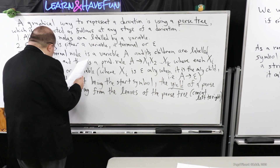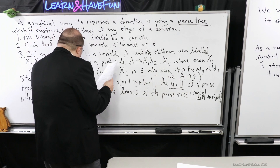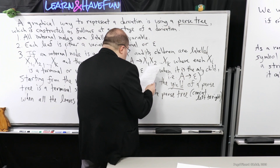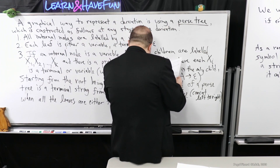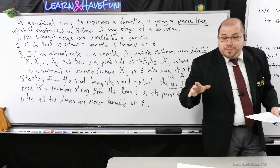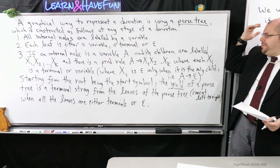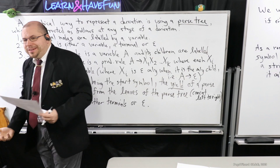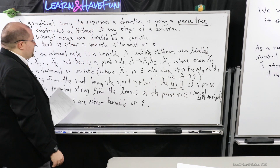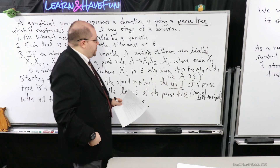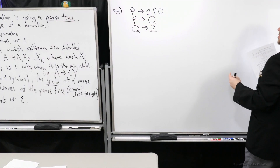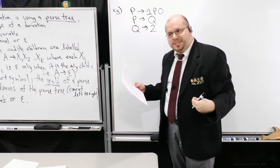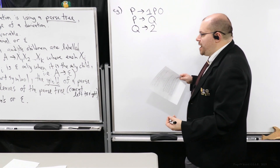The yield applies when all the leaves are either terminals or epsilon (the empty string). Let me do an example, because this is a lot of stuff to lay out. I must stress that the parse tree can describe any part of the derivation process, but I'm interested in the yield of a parse tree.